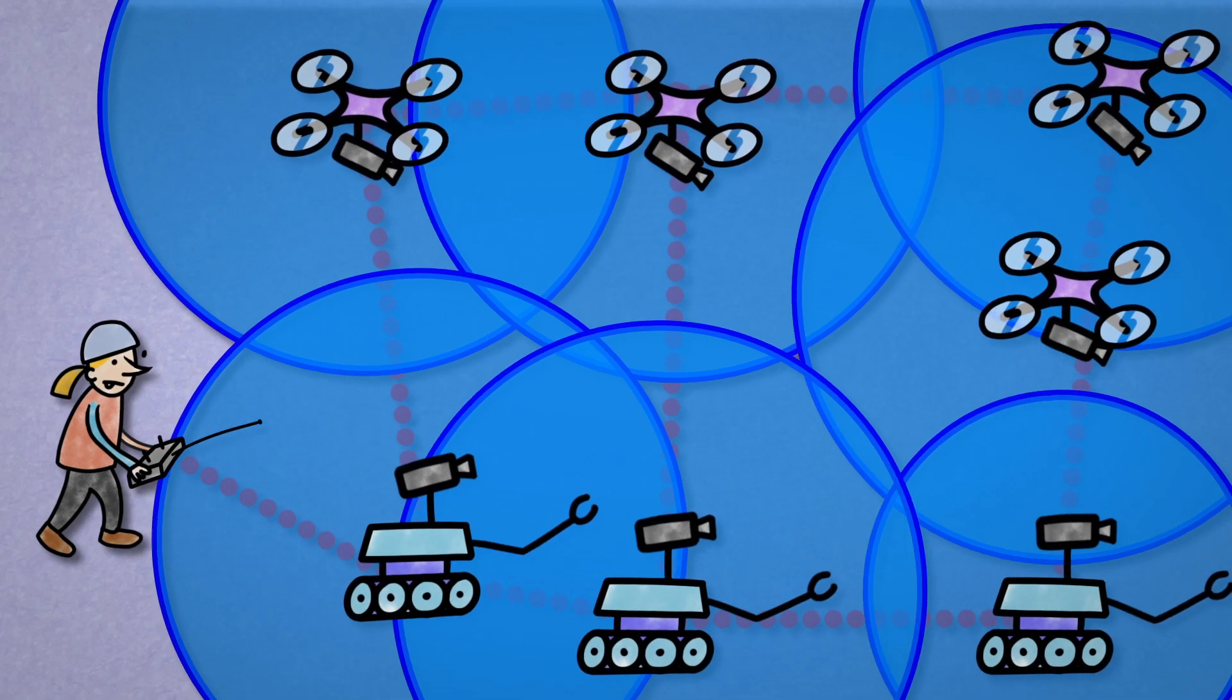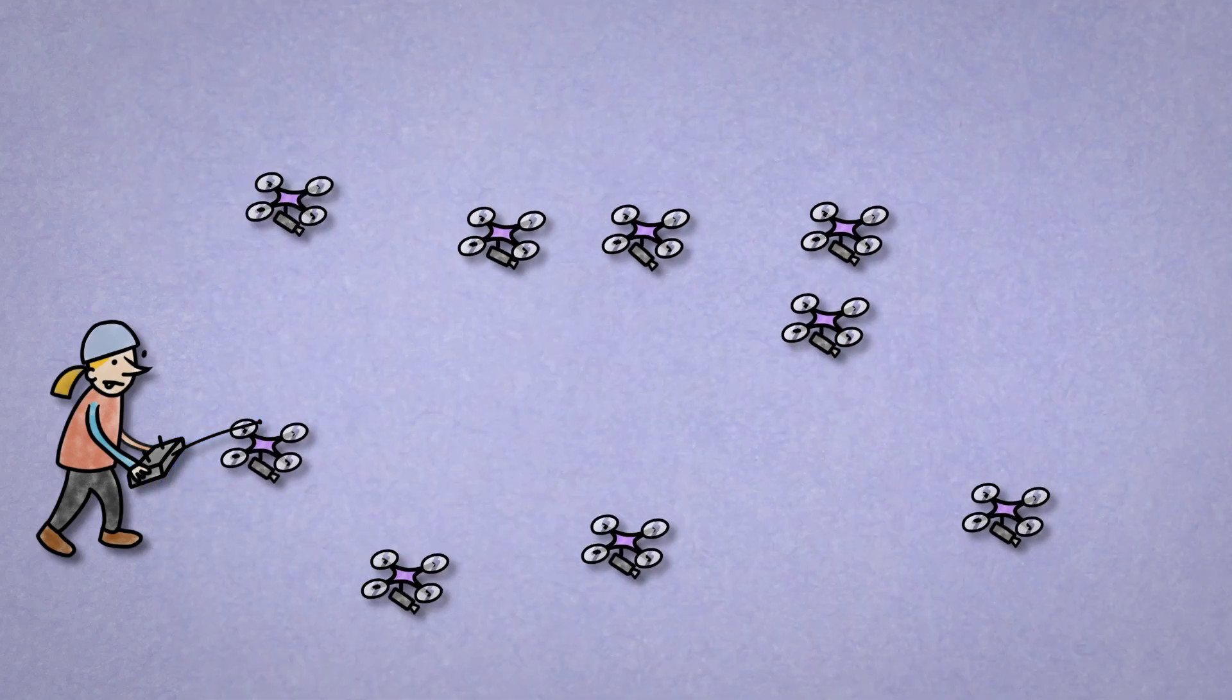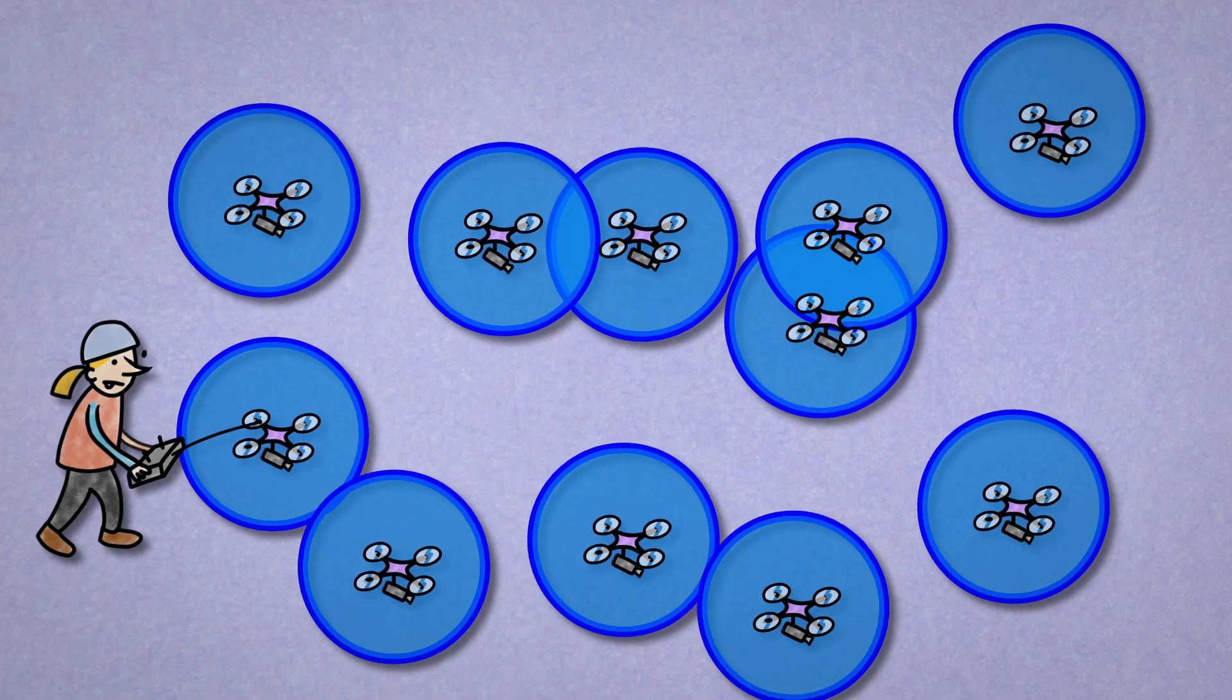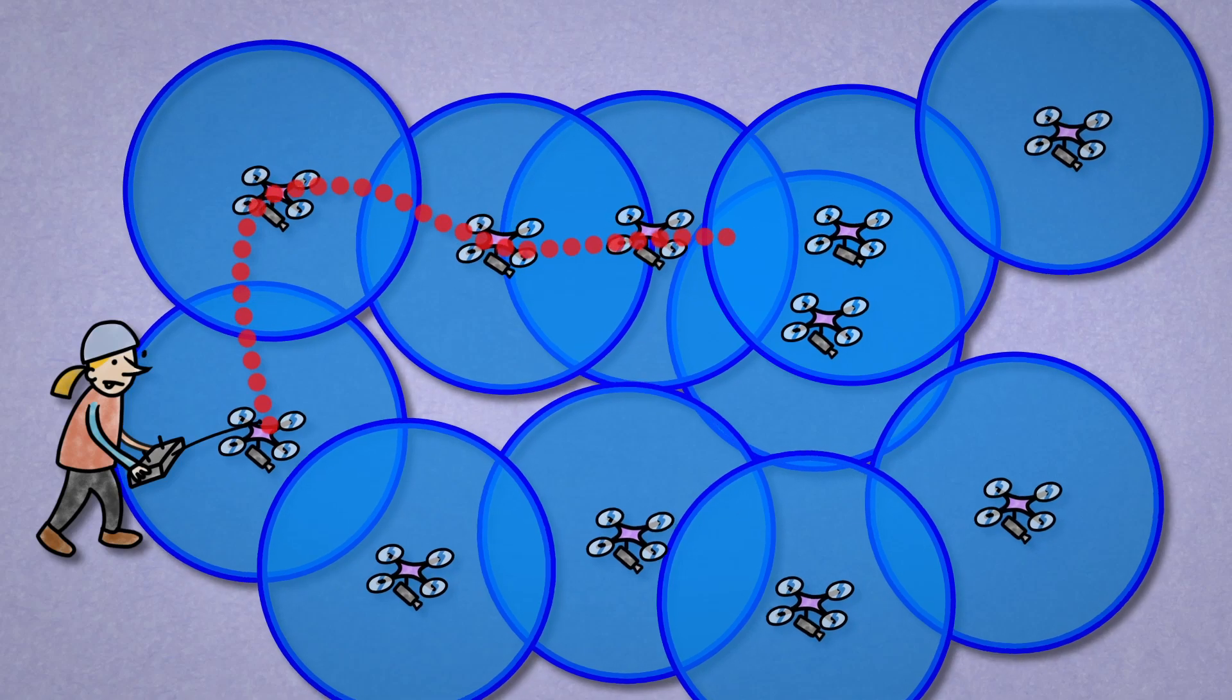The question is, how much? What range do you need for guaranteed coverage? Suppose all drones are at random positions, and all have the same range. What are the chances that a signal can be passed on from one end of the network to the other side?